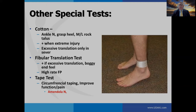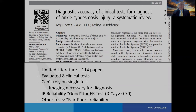Amy Swan published a paper in 2013 in the British Journal of Sports Medicine reviewing 114 papers and eight clinical tests for syndesmotic injury. She found that the dorsiflexion external rotation test — the Klieger test — had good reliability, but you can't rely on a single test and really need imaging for diagnosis. The other tests had fair to poor reliability.